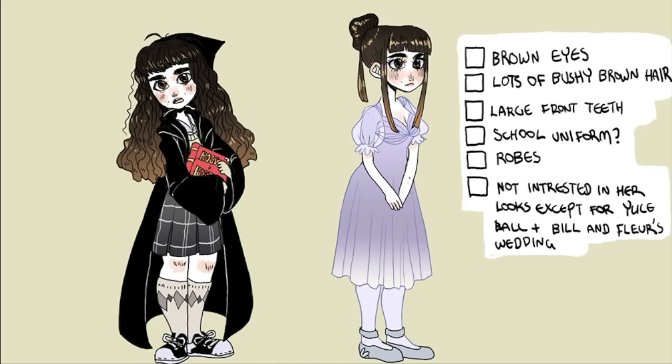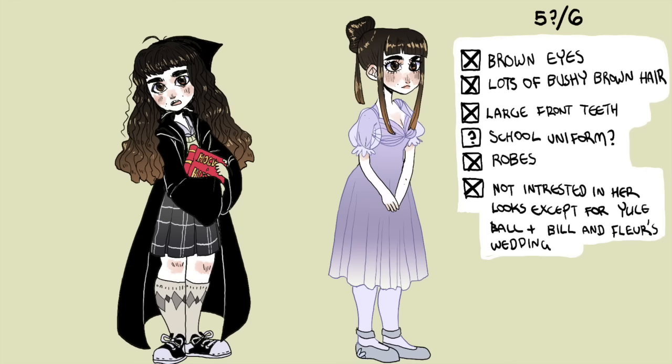I'm really sorry about that. Here's the breakdown of the points I was trying to hit and me grading myself. I gave her brown eyes, bushy hair — I feel I did a pretty good job of that. I tried to show her large front teeth. I didn't give myself full points for the school uniform since I didn't know exactly what it looked like. I tried to make sure she looks like someone who doesn't spend a lot of time on hair or makeup — I even gave her some little moles so you can see she's not wearing foundation. I gave myself five out of six points.